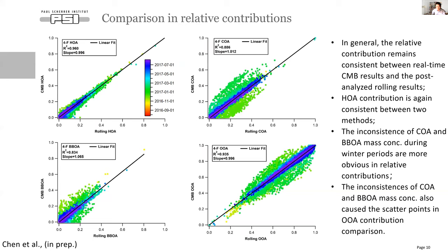This slide shows the comparison in relative contribution of each OA component. In general, it remains consistent between the two methods. The OOA contribution shows the most impressive agreement. The inconsistencies of COA and BVOA are more obvious here, and these also cause scatter points in the OOA contribution comparison. But overall, both POA and OOA show good agreement with R-squared larger than 0.93 and slope close to 1.